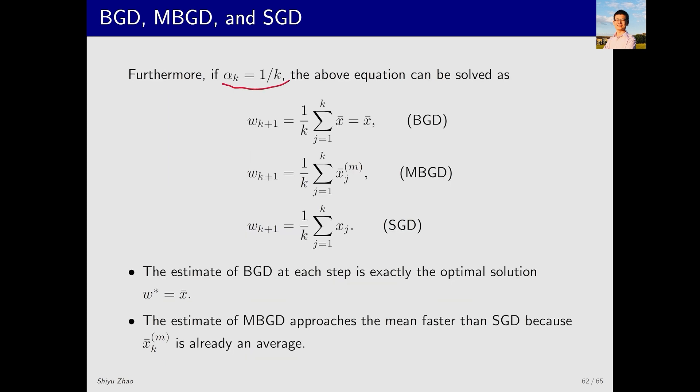Further, if we set alpha_k equals 1 over k, we can explicitly get the expression of W_k. In the case of BGD, W_{k+1} equals X-bar directly, reaching the solution in one step because it uses all the samples.